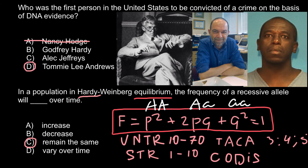The correct answer is C — the frequency of the recessive allele remains the same, because all three genotypes are in balance. I also want to return to the importance of Alec Jeffries' work: his techniques not only put many guilty people in prison but also allowed many innocent people to be released. Of 200 cases reviewed, 13 people were on death row for crimes they never committed — and that is very important.